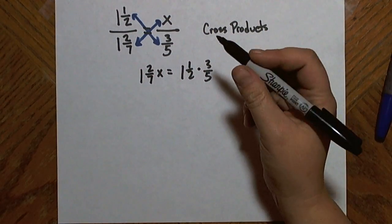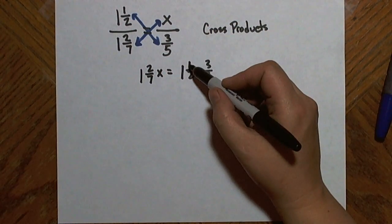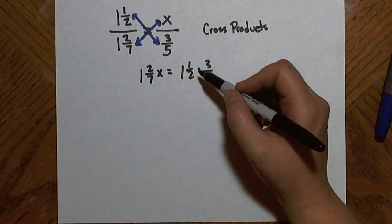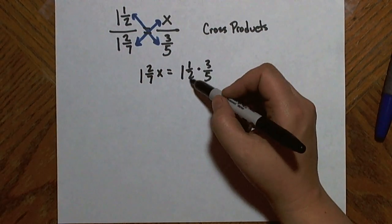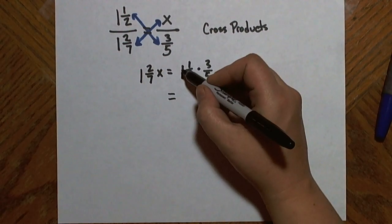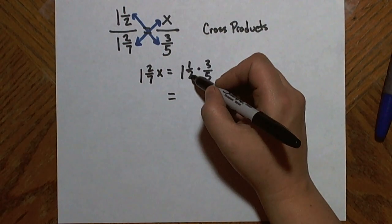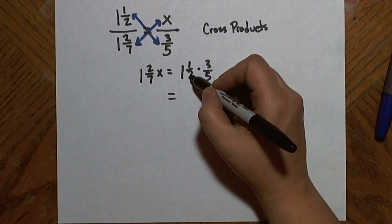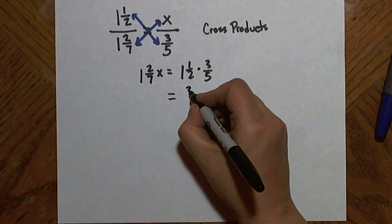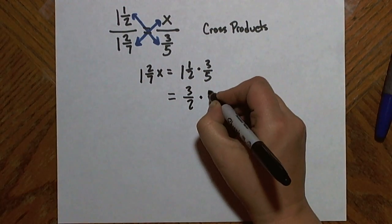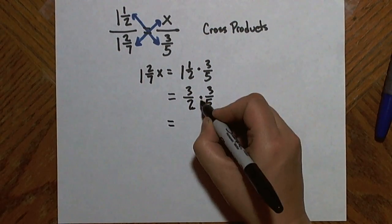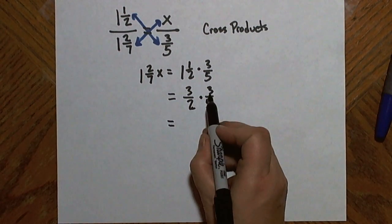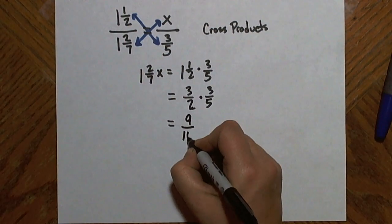In order to do this problem, I see I'm working with some mixed numbers. And when I'm multiplying or dividing mixed numbers with fractions, I want to make the mixed numbers into improper fractions. So the first thing I'll do is one and one half changes to one times two plus one is three halves times three fifths. There's nothing that cancels in that multiplication, so I'll multiply across and get nine over ten.